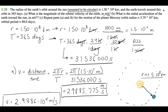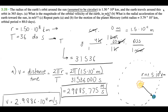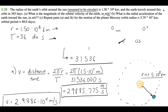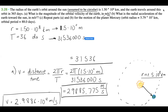Now for part B: what is the radial acceleration towards the Sun in meters per second squared? We know that radial acceleration, a_rad, is equal to v squared over r. So all we have to do is plug in our orbital velocity. That's 2.9886 times 10 to the 4, squared, over the radius, which is 1.5 times 10 to the 11. And I'm going to rewrite our knowns: R is 1.5 times 10 to the 11 meters, and T is 31,536,000 seconds.